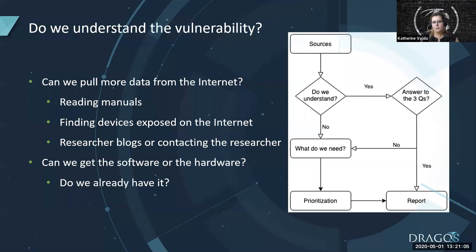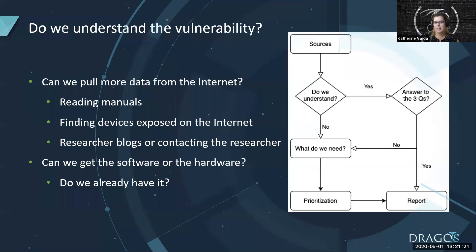We'll look up blogs from the researcher and even reach out to the person who found the vulnerability, because often they respond and tell you more about what they found. We'll also download vulnerable software and try to recreate the issue. If it's hardware, we'll try to get a hold of it. We'll try to recreate it in our own lab so that we get a clear picture and understanding of what the vulnerability is, and then we try to prioritize it.